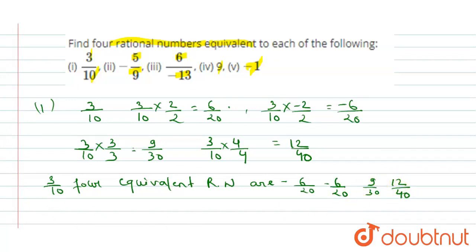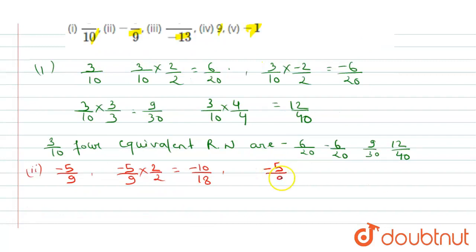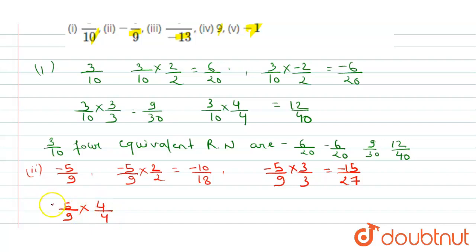Now similarly we solve for the second number, which is minus 5 upon 9. Minus 5 upon 9 multiplied by 2 by 2 gives minus 10 upon 18. Minus 5 upon 9 multiplied by 3 by 3 gives minus 15 upon 27. Multiplied by 4 by 4 gives minus 20 upon 36, and minus 5 upon 9 multiplied by 5 upon 5 gives minus 25 upon 45.